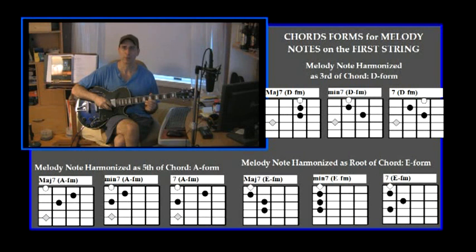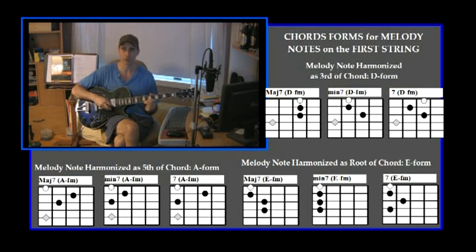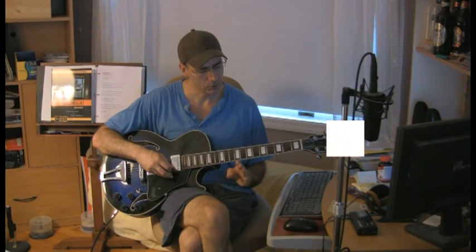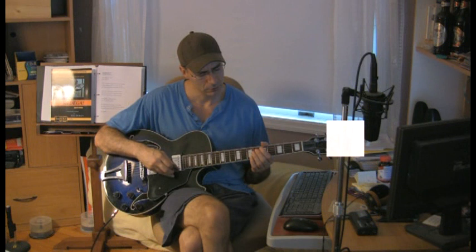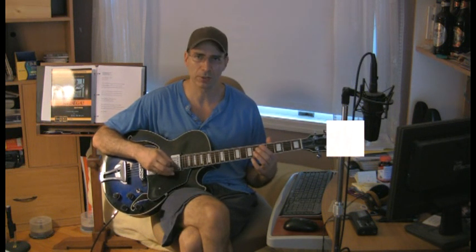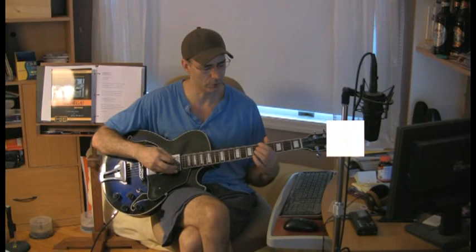For that last melody note, when I want to place it as a root, I can use either an E-form or a G-form because those forms carry their roots on the first string. So let's go through that melody line and put chords to it, in each case placing the melody notes as thirds of chords.